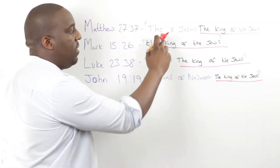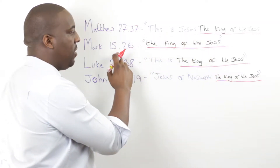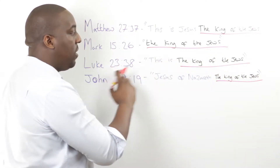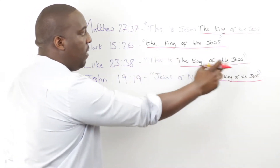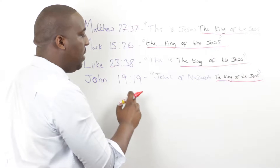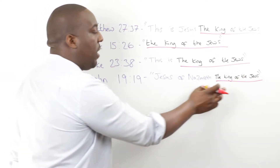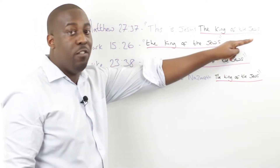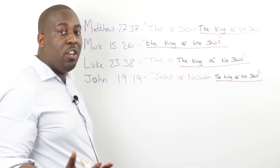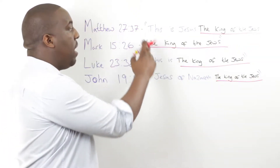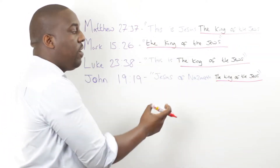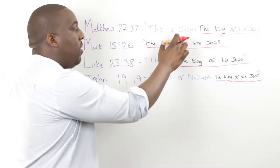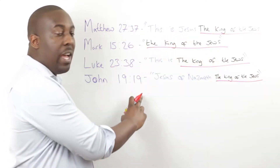In Matthew it says 'This is Jesus,' in Mark it just says 'the King of the Jews,' in Luke it says 'This is the King of the Jews,' and in John 19:19 it says 'Jesus of Nazareth, the King of the Jews.' All of them say 'the King of the Jews,' and if you look at Luke and Matthew, they're basically saying the exact same thing — the only difference is Matthew doesn't include 'Jesus.'